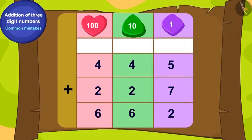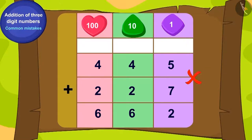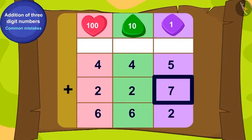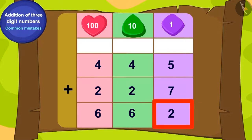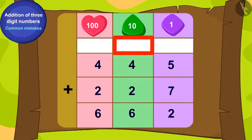Is this addition correct? You have rightly found out that this addition is incorrect. Can you tell what went wrong here? While writing the addition of five ones and seven ones as twelve ones, we forgot to write the carryover of one.